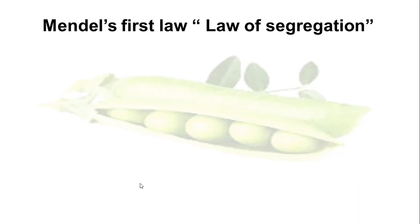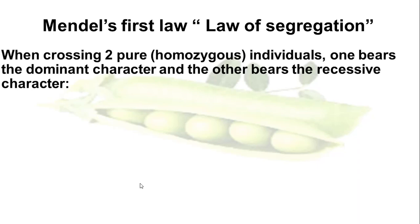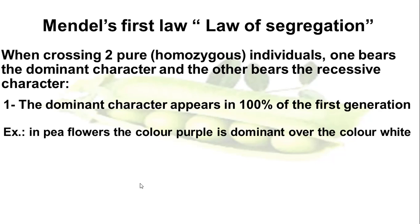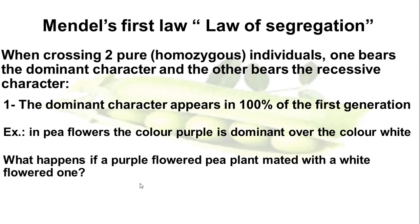Let's try to interpret Mendel's first law, or what we call the law of segregation. When crossing two pure or homozygous individuals — meaning both genes in each individual are exactly the same — one bears the dominant characteristic and the other bears the recessive characteristic. The dominant character appears in 100% of the first generation. For example, in pea flowers the color purple is dominant over white. If a purple-flowered pea that is homozygous — both genes dominant — is crossed with a white flower, we need to know that the purple is pure, dominant.